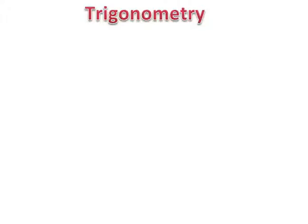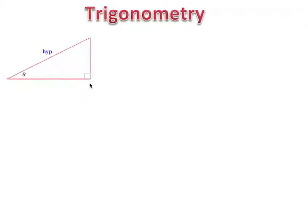Trigonometry! Here we have a right-angled triangle, and we have an angle — I'm calling this angle theta. This is the hypotenuse of the right-angled triangle. It's the longest side, it's opposite to the right angle, it's the only side that doesn't contain the right angle.